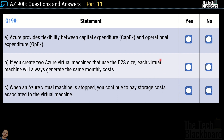Question number 190, another yes/no question. Statement 1: Azure provides flexibility between capital expenditure (CAPEX) and operational expenditure (OPEX) — this is true. Traditionally IT expenses were capital expenditure because organizations built their own data centers requiring huge upfront capital. With cloud services today, you get flexibility between CAPEX and OPEX through pay-as-you-go pricing with providers like Microsoft Azure, Amazon AWS, or Google GCP.